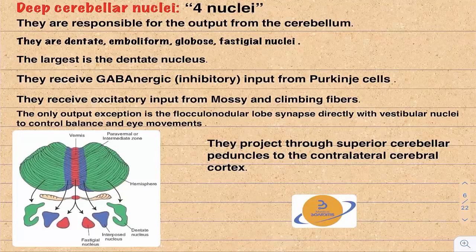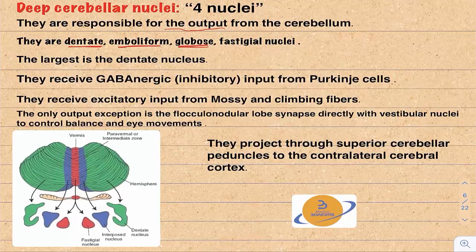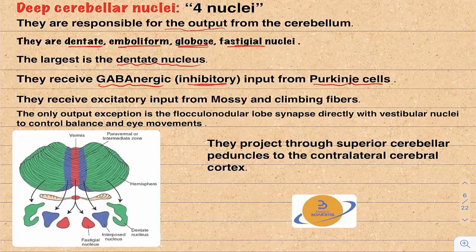The cerebellum has four deep nuclei: the dentate nucleus, emboliform, globose, and fastigial. The largest and most important is the dentate nucleus. These nuclei are responsible for most of the output from the cerebellum. They receive GABAergic, inhibitory input from Purkinje cells, and also excitatory input from mossy and climbing fibers.